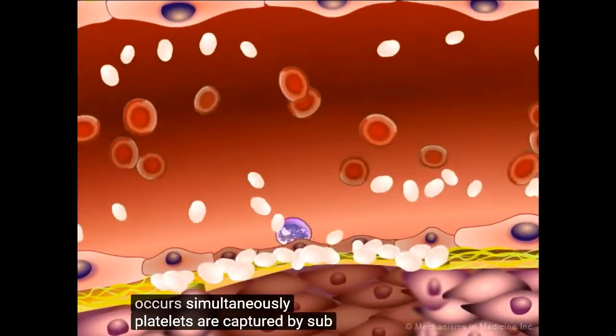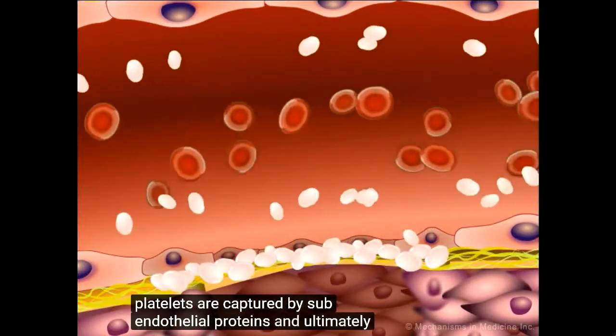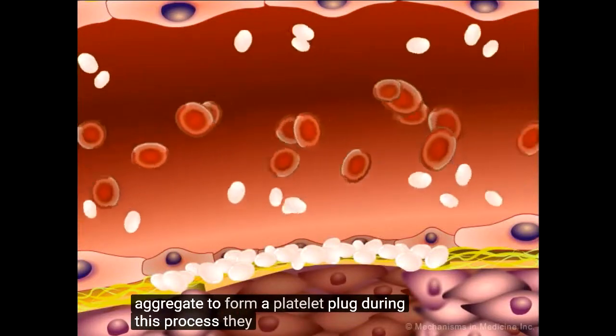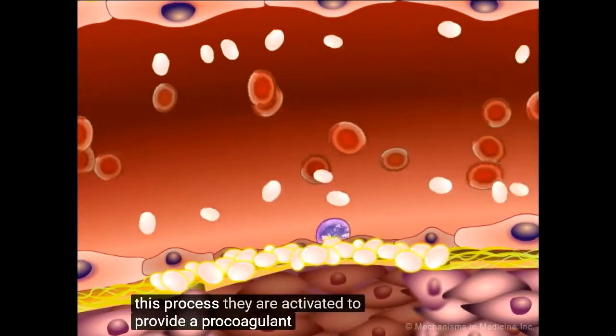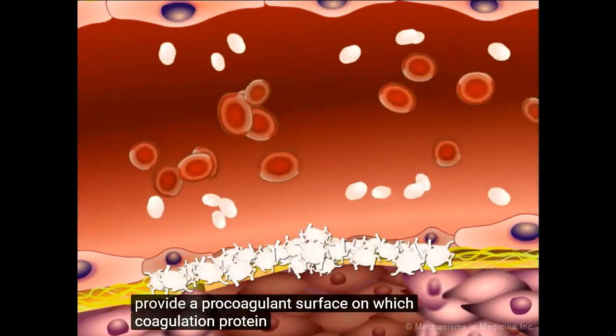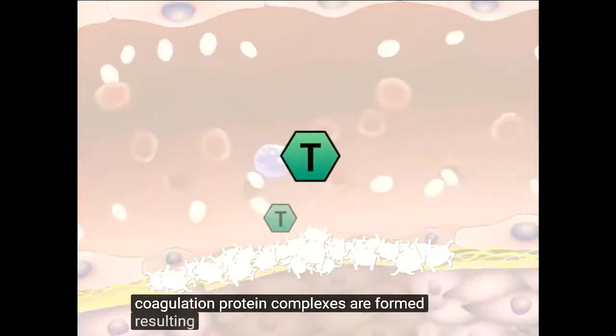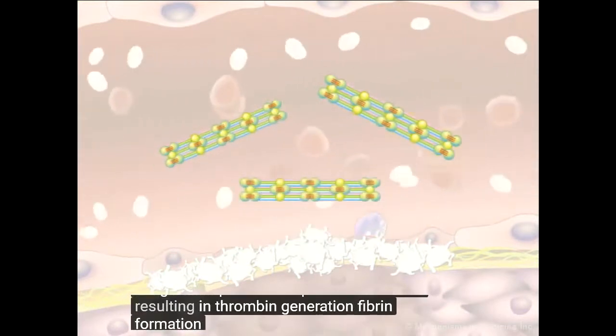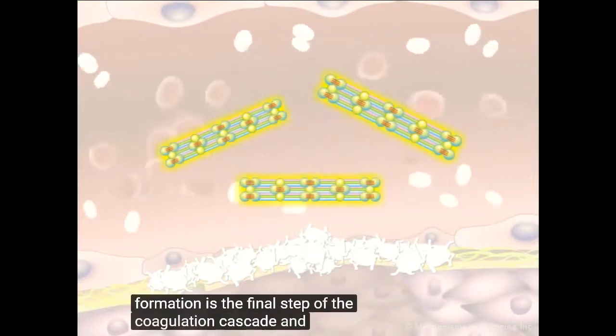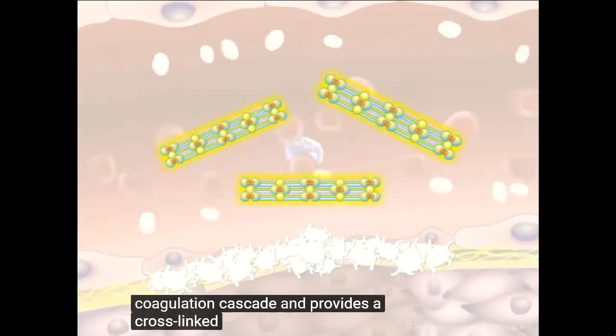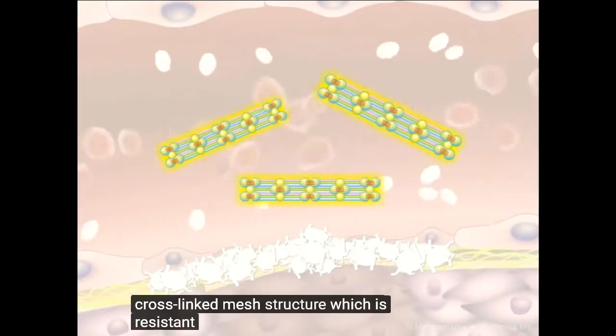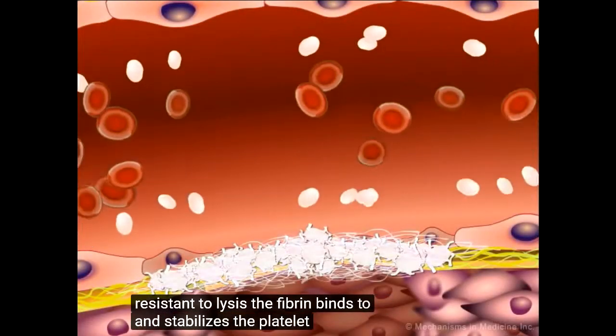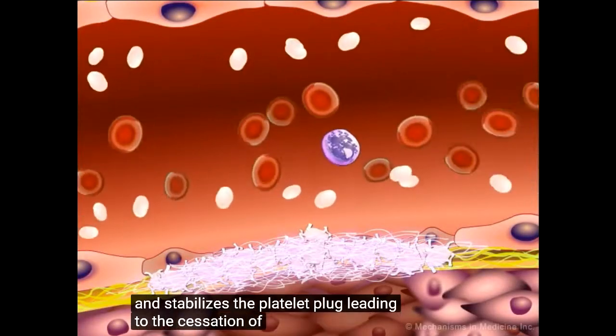Platelets are captured by subendothelial proteins and ultimately aggregate to form a platelet plug. During this process, they are activated to provide a pro-coagulant surface on which coagulation protein complexes are formed, resulting in thrombin generation. Fibrin formation is the final step of the coagulation cascade and provides a cross-linked mesh structure which is resistant to lysis. The fibrin binds to and stabilizes the platelet plug, leading to the cessation of bleeding.